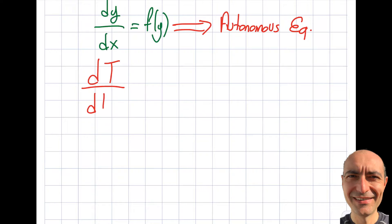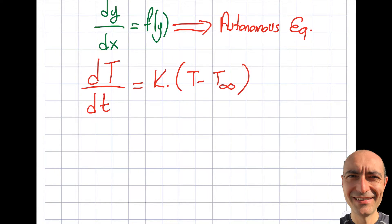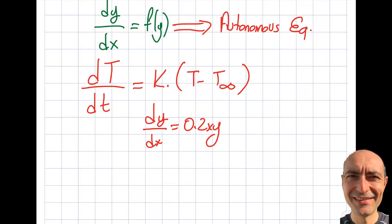Capital T is temperature and lowercase t is time. k is a constant. This equation — dT/dt = k(T − T_ambient) — is Newton's Law of Cooling. For example, a block of steel at 8°C placed in water at 20°C: the temperature behavior is expressed by this equation. On the right-hand side you see no time dependence, so this is an autonomous equation. By contrast, dy/dx = 0.2xy is a non-autonomous equation.